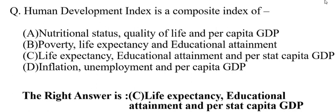d) Inflation, unemployment and per capita GDP. The right answer is c: Life expectancy, educational attainment and per capita GDP.